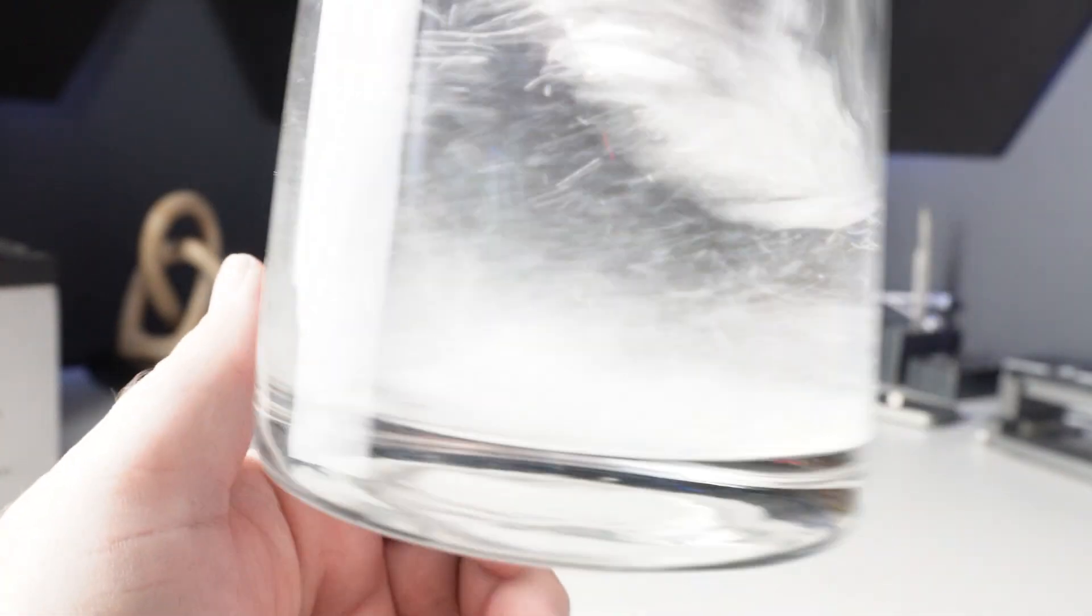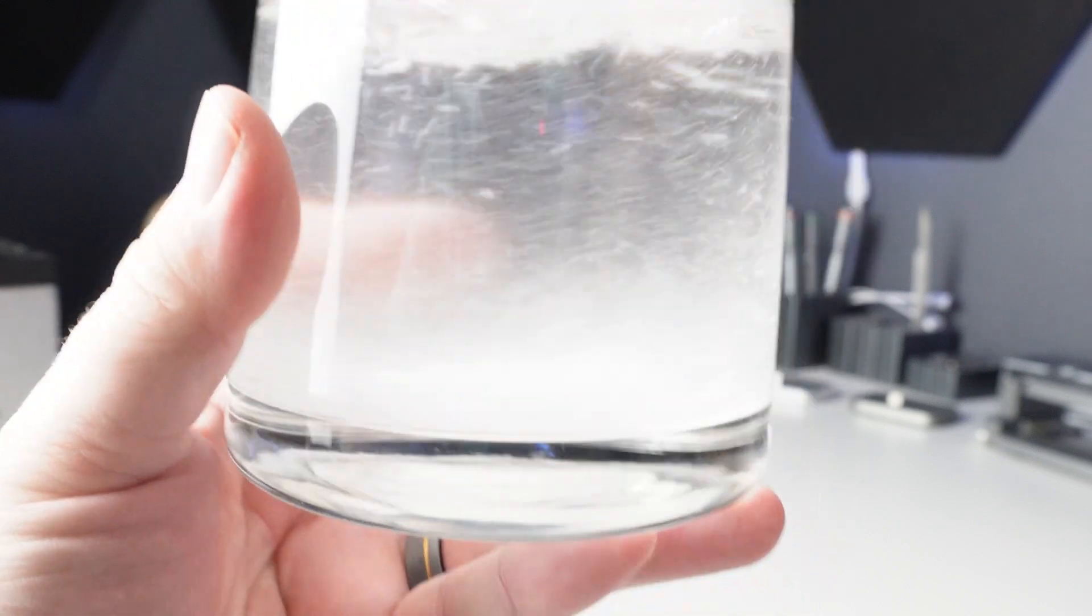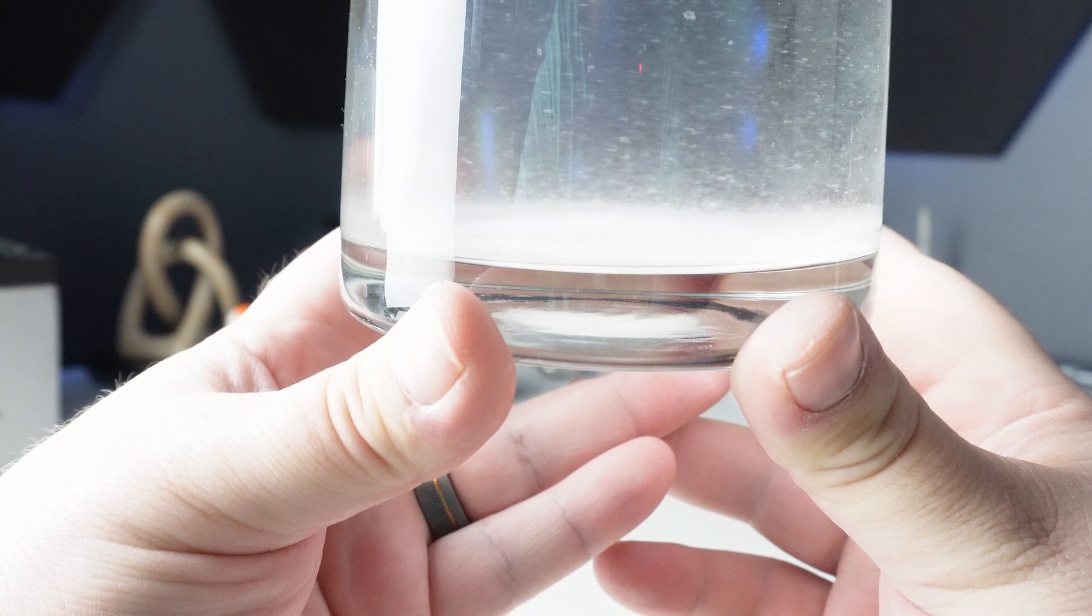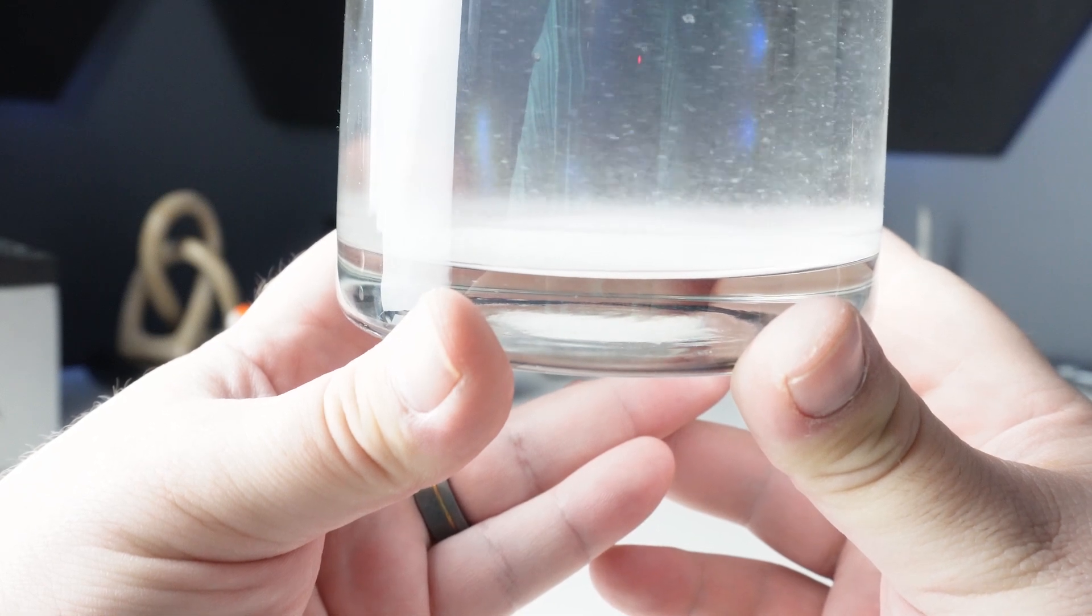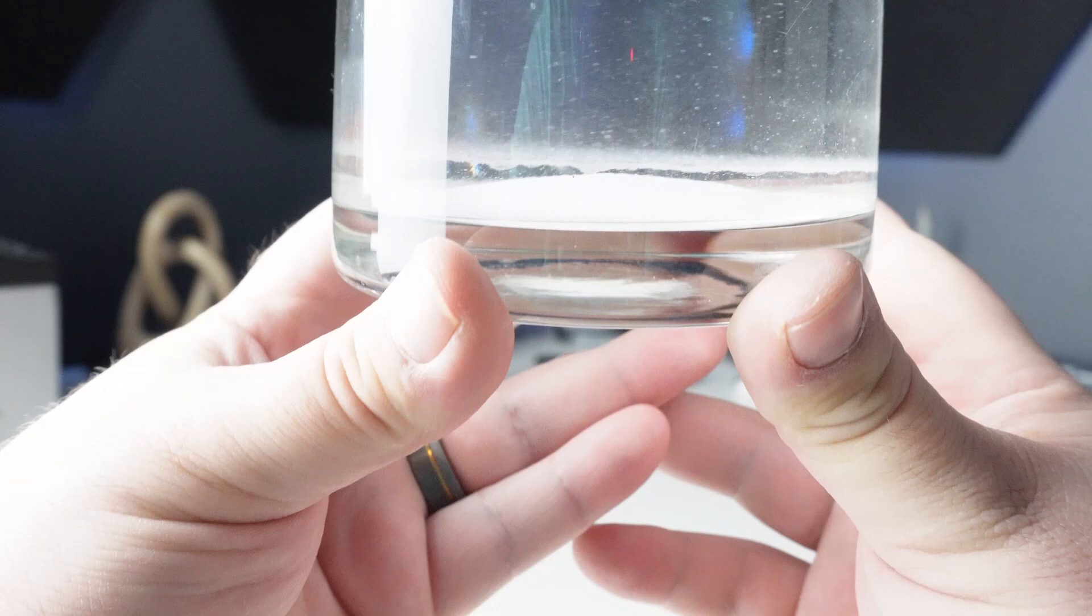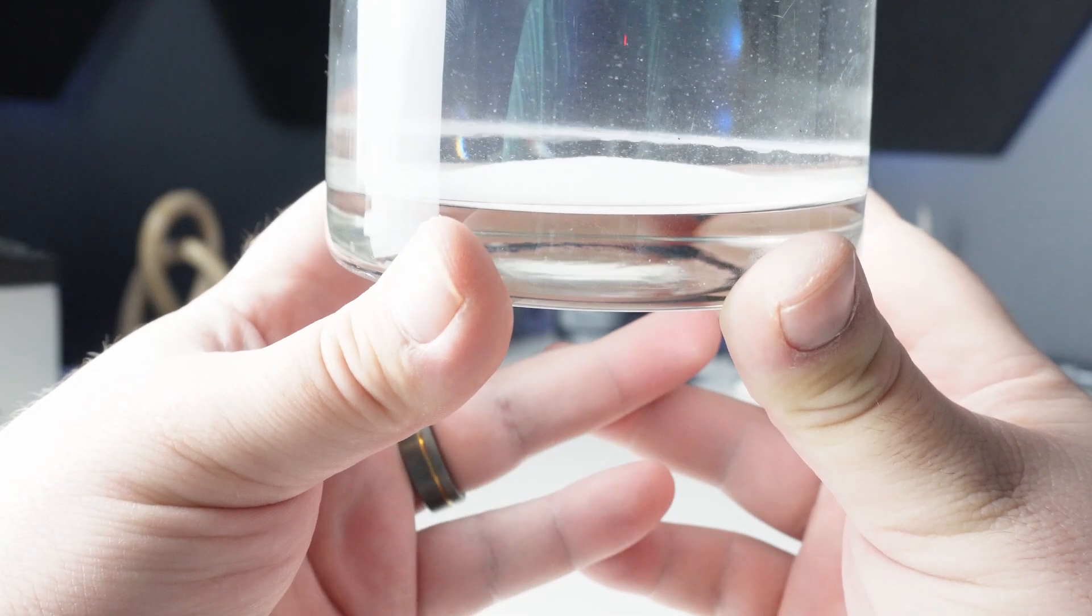Even though we're not fully done mixing, let's see if anything starts to happen. We just let it kind of start to settle. What we're looking for is a distinct line between the top and the bottom section. And actually, I'm seeing one form there. You see that? Look at that.